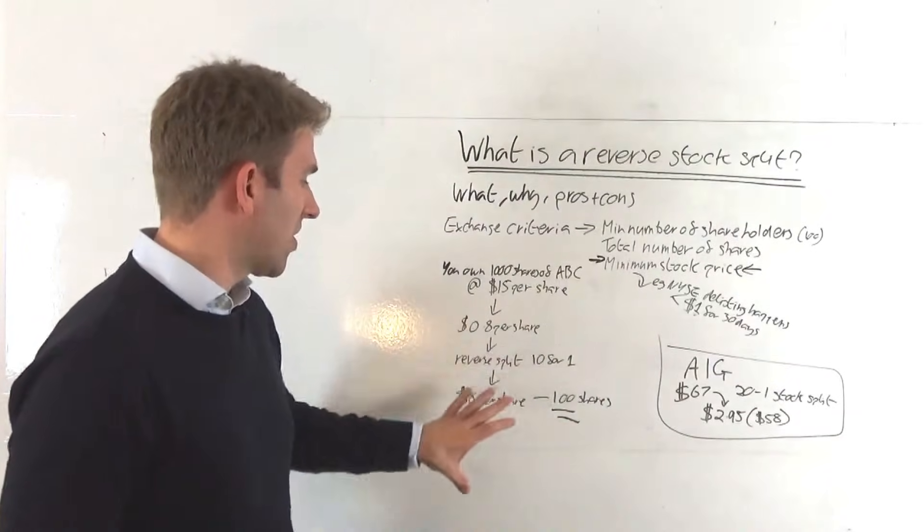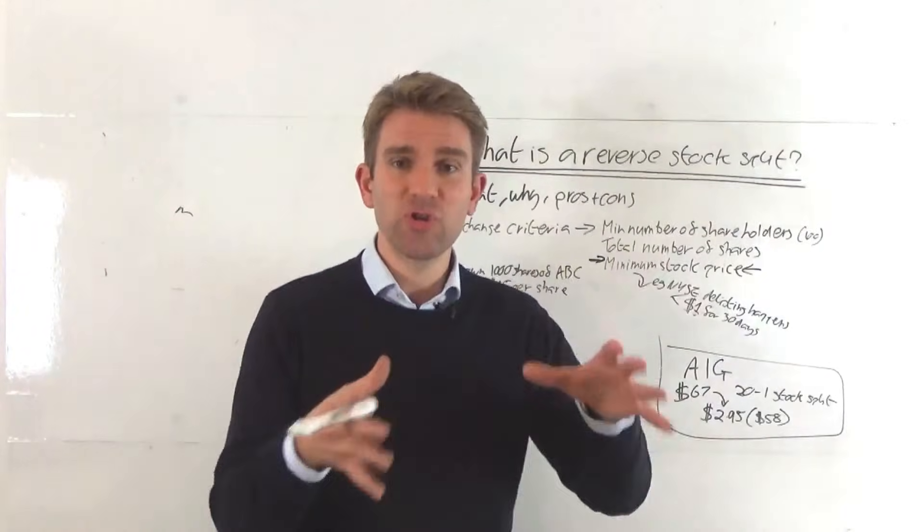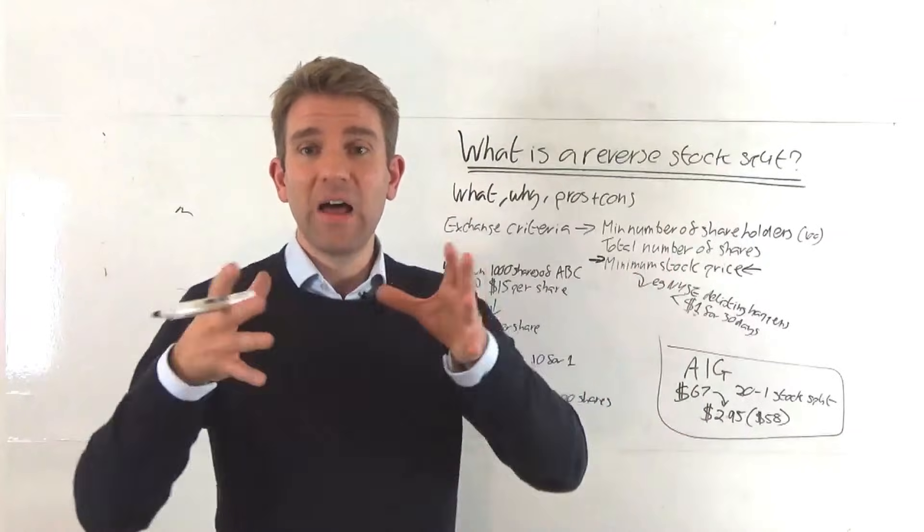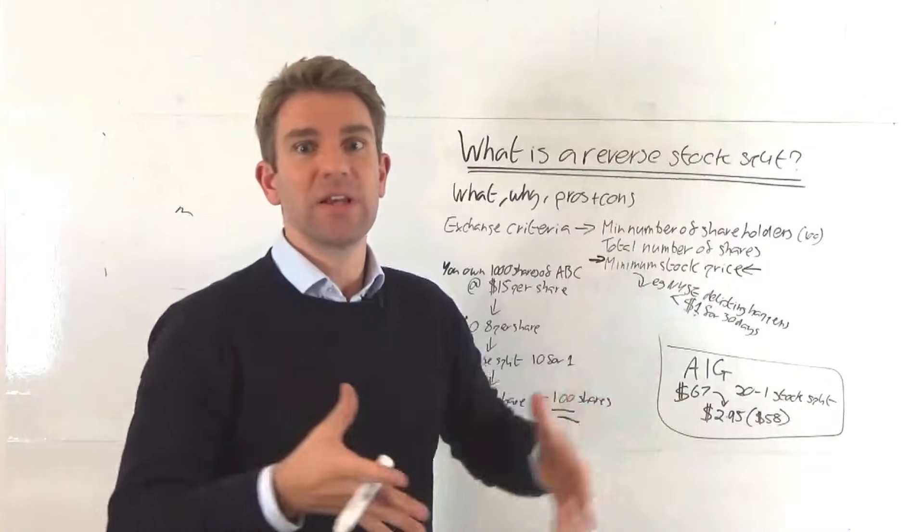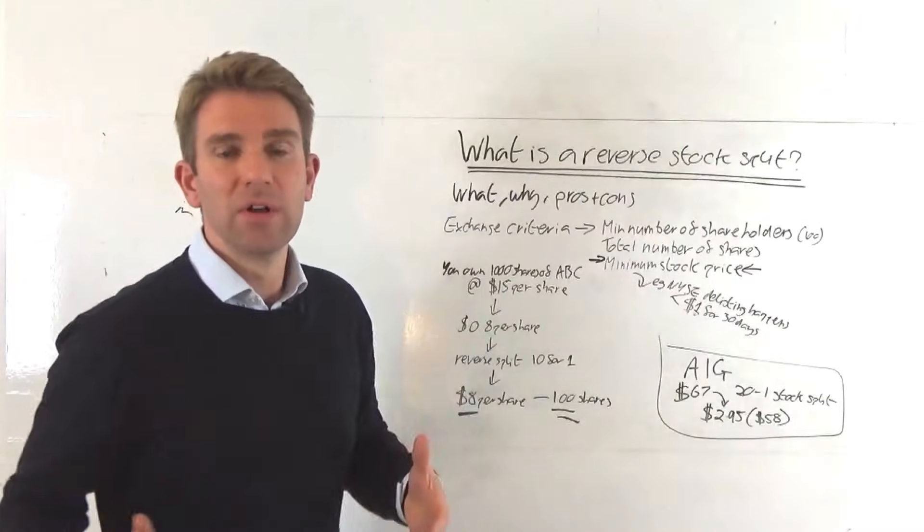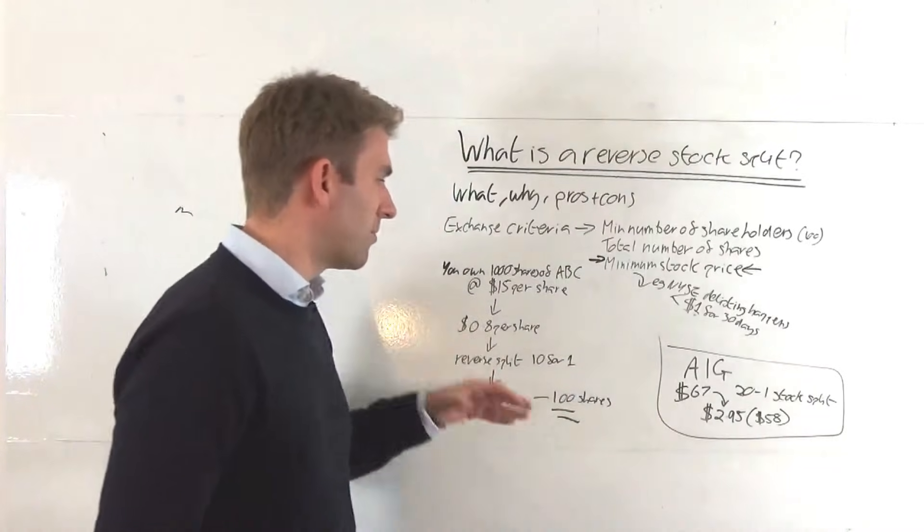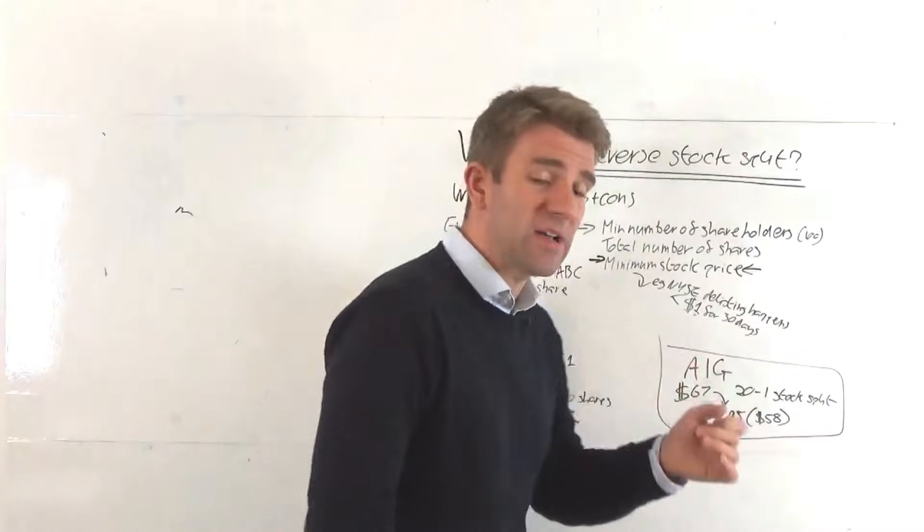And all you're doing is the valuation is still exactly the same. The value for the company has not changed. The structure has just changed. You've got different amount of shares and those shares are worth different numbers because they've just taken 90%, if you like, of the shares out of issue so that it's made more valuable per share. AIG is a great example of this.